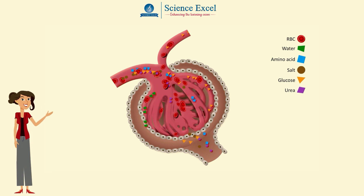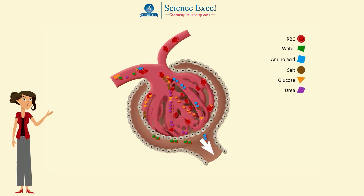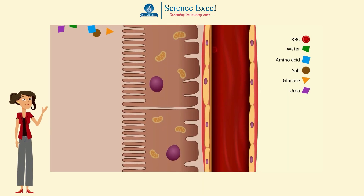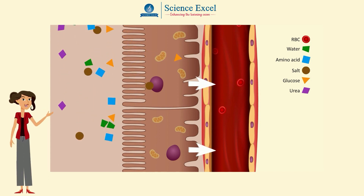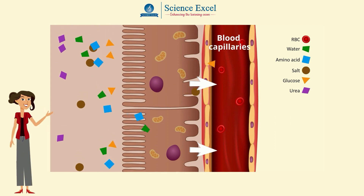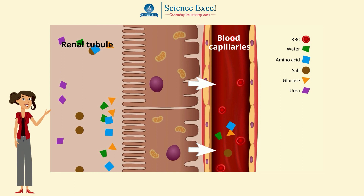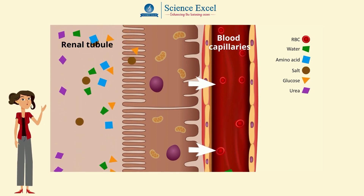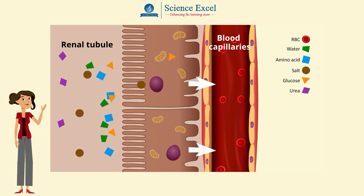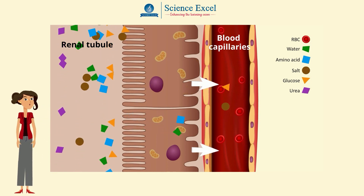When the filtrate exits the glomerulus, it flows down into the renal tubule. As the filtrate moves, useful substances are reabsorbed and pass back into the blood in the capillaries that surround the renal tubule. Reabsorption takes place by passive diffusion and active transport, and it occurs only to the extent that the normal concentration of the blood is undisturbed.